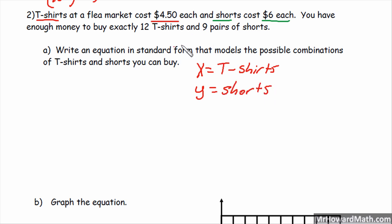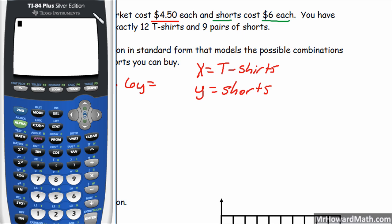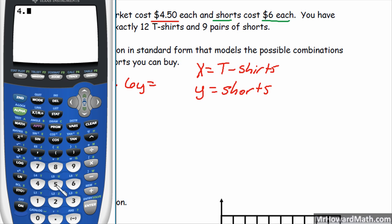Okay, now the total is a little more difficult in this problem. They don't exactly tell us, but we can figure it out. If t-shirts are $4.50 each and I can buy 12 of them, then that would be 12 times $4.50. Plus, the pairs of shorts, I can buy nine of them and they're $6 each. So let's start our equation: it would be 4.5x plus 6y equals, and we'll get the total right now. So 4.5 times 12.